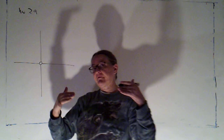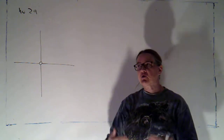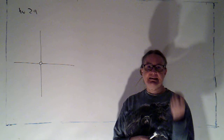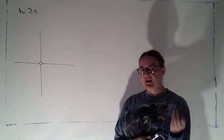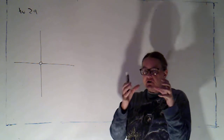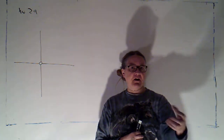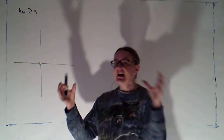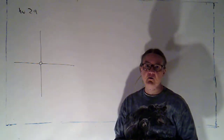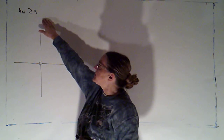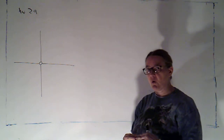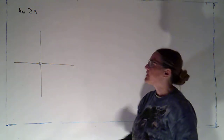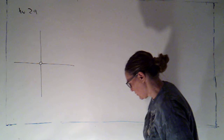In homework problem 29, you prove that if you have a vector field in 3-space, certain partial derivatives of the component functions are equal. Those end up being essentially the mixed second partials for your potential function — the two mixed partials with respect to x and y are equal, those with respect to y and z are equal, and those with respect to x and z are equal. That problem doesn't explicitly state that if those equations hold on a simply connected region your vector field is conservative, but that is true.